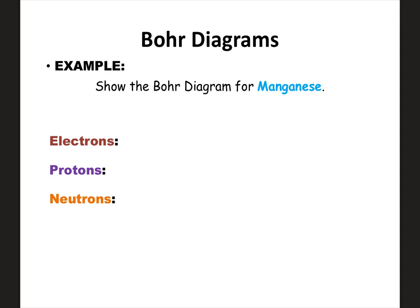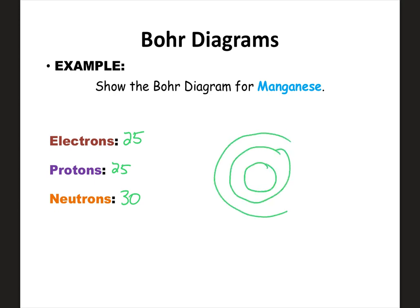Now we're going to try this for manganese. You're welcome to pause and try it on your own. Manganese is element number 25, so we have 25 protons and 25 electrons. Subtracting from the most common mass number gives 30 neutrons. Manganese is in the fourth row on the periodic table — even though it's in the 3d block, the question is which row, and the answer is four. So you have to draw four rings. We label 25p and 30n in the center.